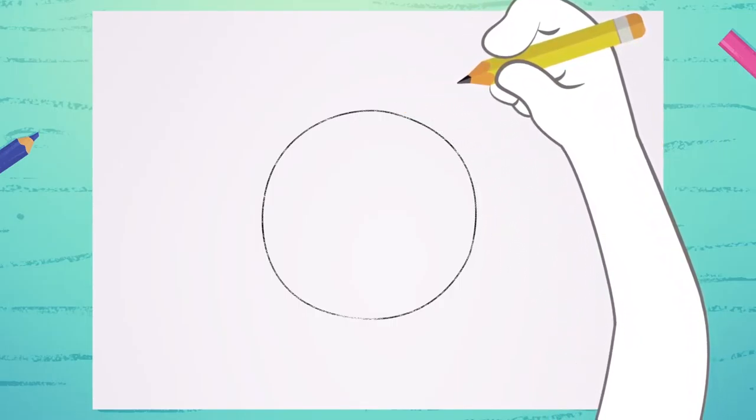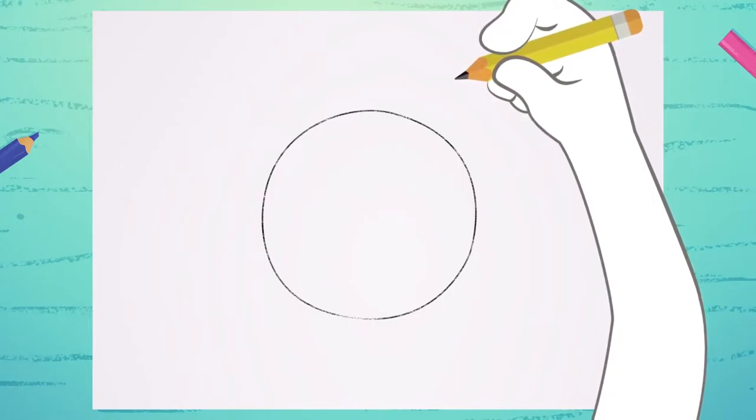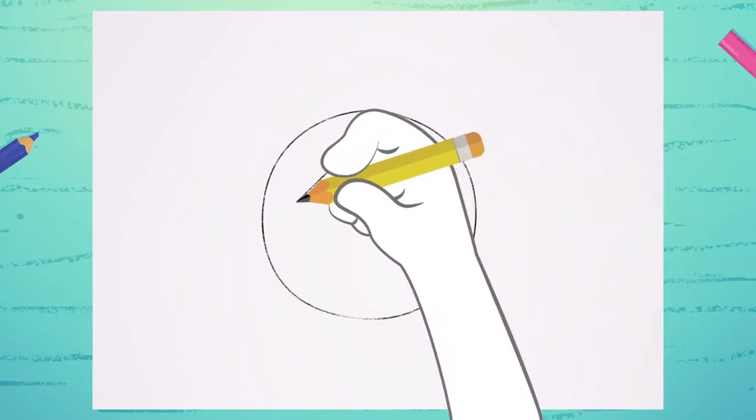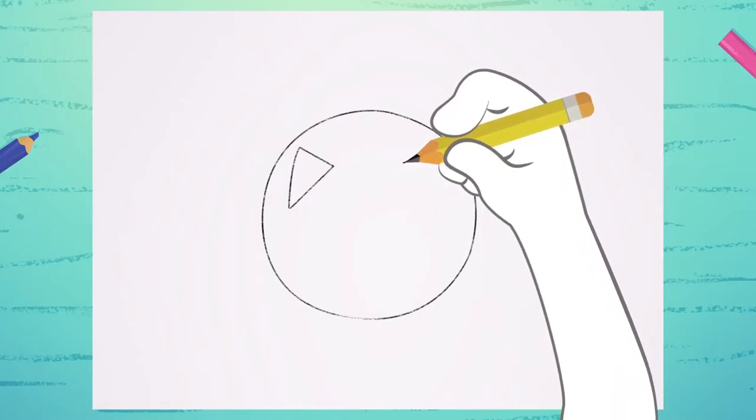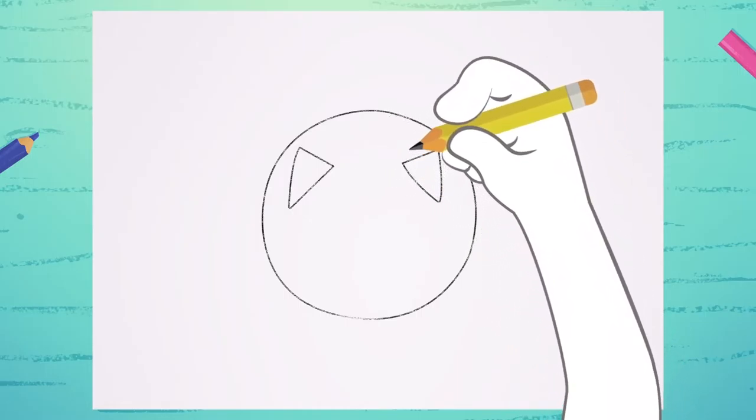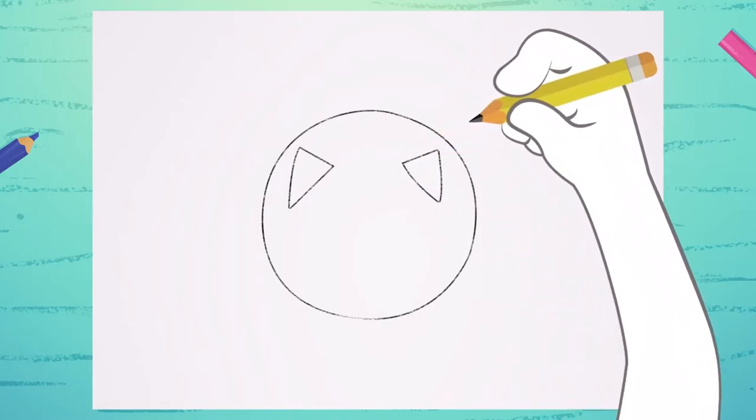Inside the circle, draw the two triangles upside down. See? The ears!